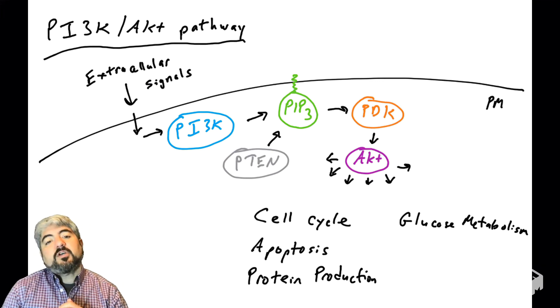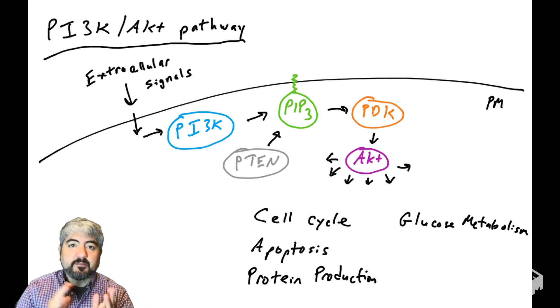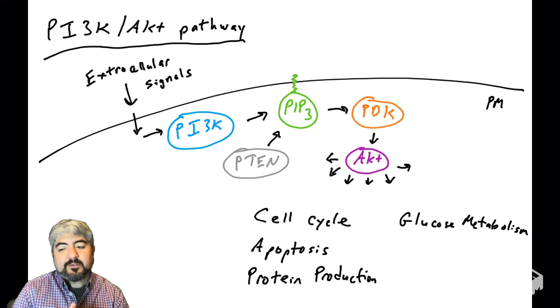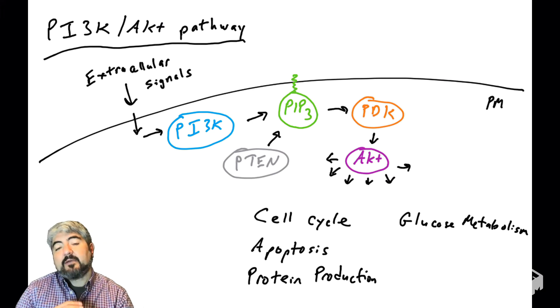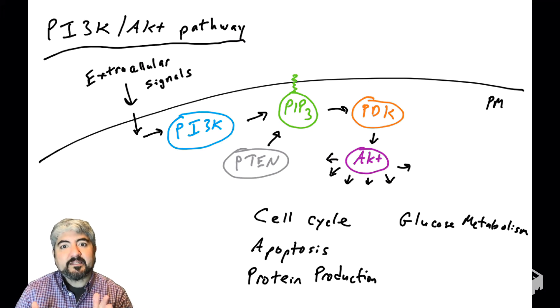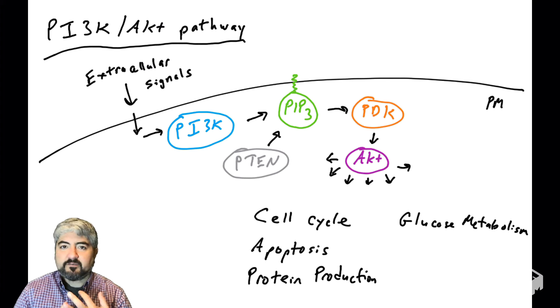In this video, we're going to talk about PI3 kinase, an enzyme that modifies PIP2 and converts it to PIP3, which we covered in a previous video. In this video and the next video, we're going to talk about PI3 kinase, how it's regulated, what it's made of, and how it's mutated in many human cancers. PI3 kinase is a very important enzyme to understand if you want to understand cell growth, cell division, and cell survival.